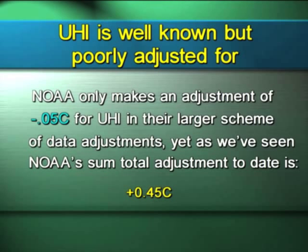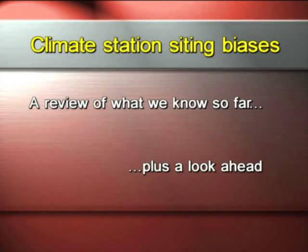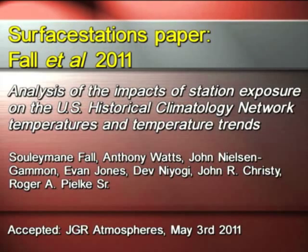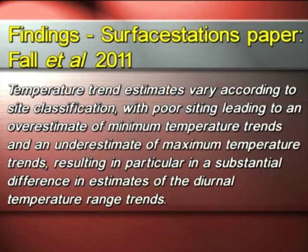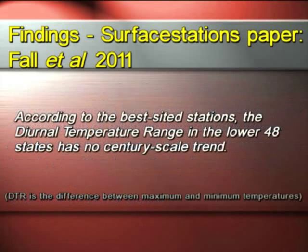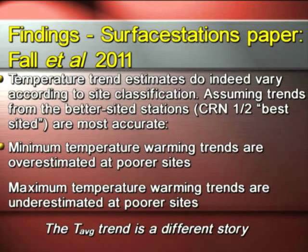UHI is not dealt with appropriately in the record — only five one-hundredths of a degree centigrade adjustment out of a whole 45 hundredths. We believe it should be more. From my paper last year, Fall 2011, we found that there was in fact an effect from bad station siting. Temperature trend estimates vary according to site classification, with poor siting leading to an overestimate of minimum temperature trends and an underestimate of maximum temperature trends. Also, there's a change in diurnal temperature range — no century-scale trend in the best stations.